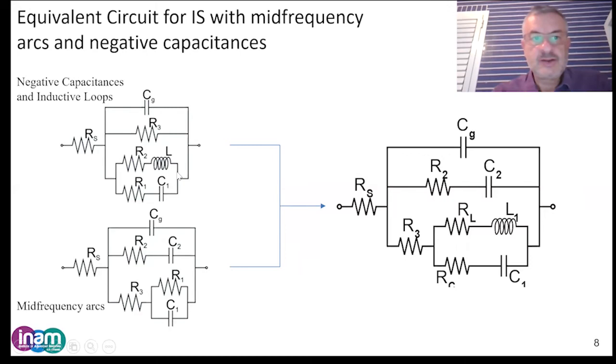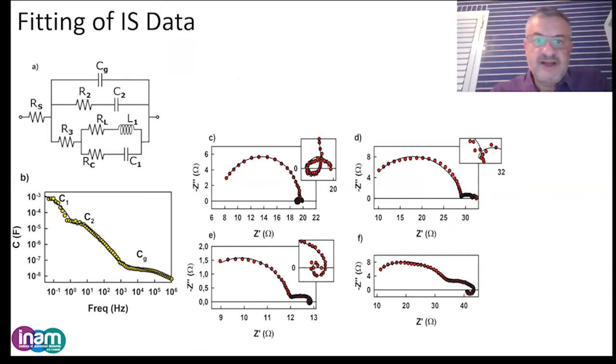Therefore, we take the model with the three branches and we add the sub-circuit that describes the inductive elements, and arrive at a new generalized equivalent circuit that should capture all the features that we have observed in the complex spectra of the carbon cell.